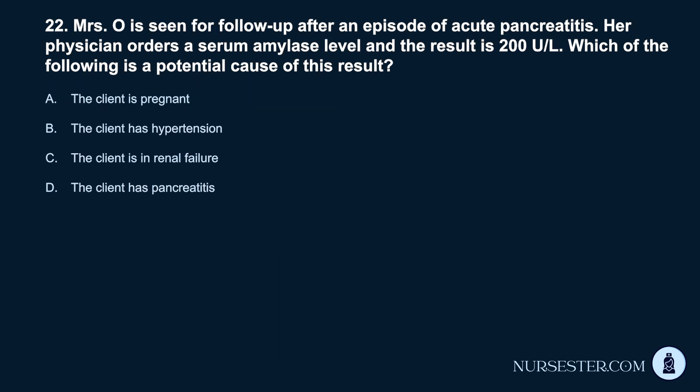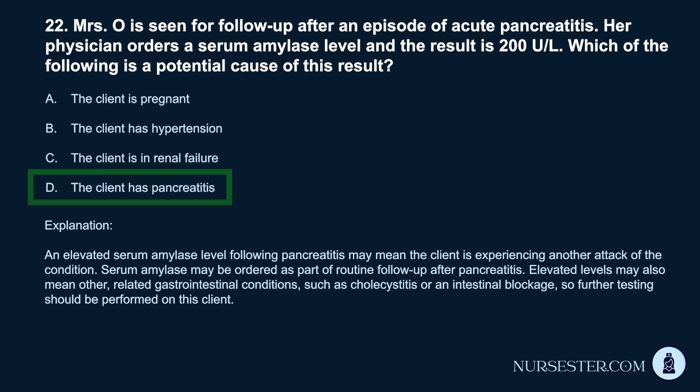Question 22. Mrs. O is seen for follow-up after an episode of acute pancreatitis. Her physician orders a serum amylase level and the result is 200 U/L. Which of the following is a potential cause of this result? a. The client is pregnant. b. The client has hypertension. c. The client is in renal failure. d. The client has pancreatitis. Correct answer: d. An elevated serum amylase level following pancreatitis may mean the client is experiencing another attack. Elevated levels may also indicate related gastrointestinal conditions such as cholecystitis or an intestinal blockage, so further testing should be performed.